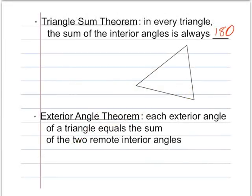A related theorem is called the exterior angle theorem. It says each exterior angle of a triangle equals the sum of the two remote interior angles. There are a few definitions we'll need to understand, starting with an exterior angle.